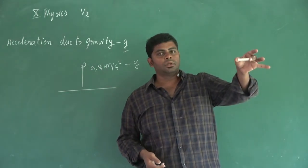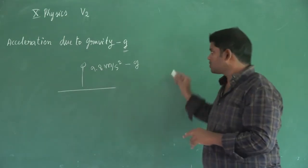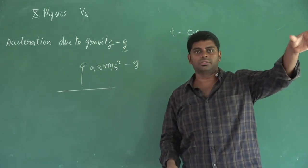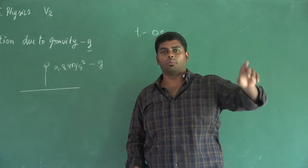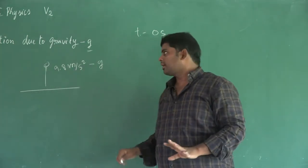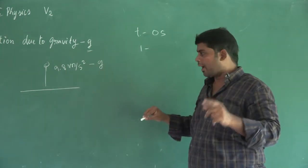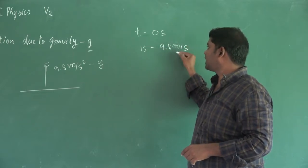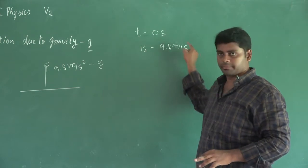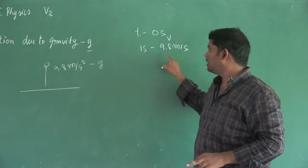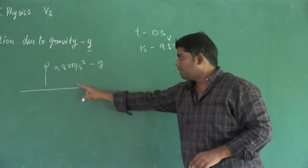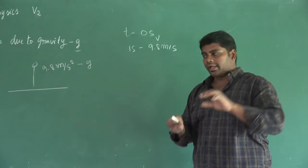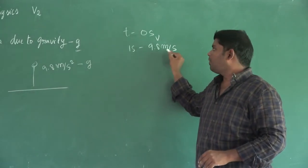If I take my hand and release it, the time is 0 seconds. I take my hand and the moment is 0 seconds. When I release it and the first second passes, gravity is acting. At the first second, the velocity will be 9.8 meters per second.